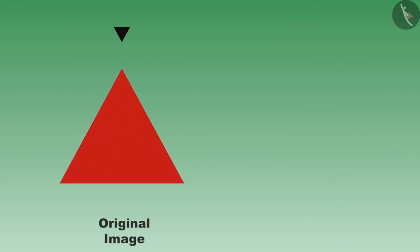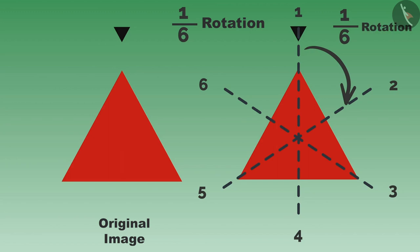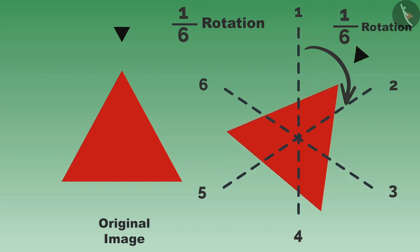Dear students, let us understand the cleverness of Tenali Rama. Look at this picture. Let us rotate by one-sixth. To do this, we will divide this figure into six equal parts with six lines across the center. You can see these six lines are passing through the center. If you rotate by one-sixth, rotate the picture in this way.